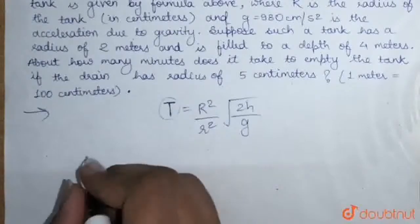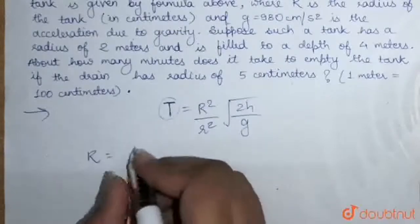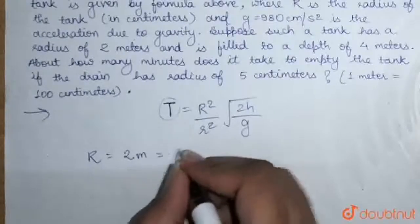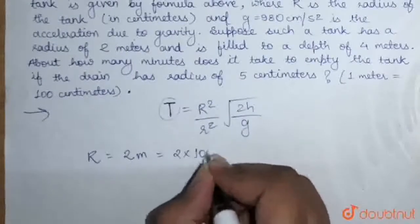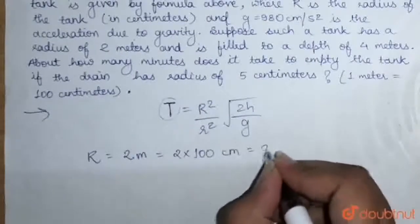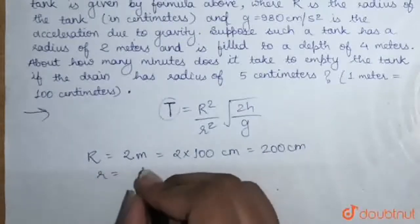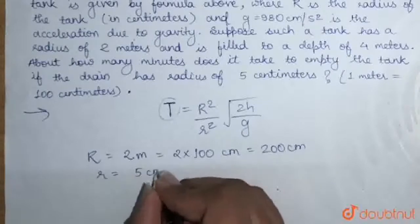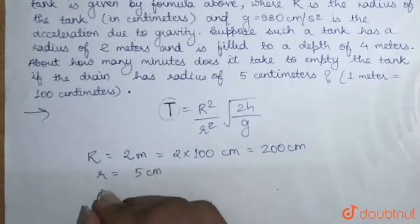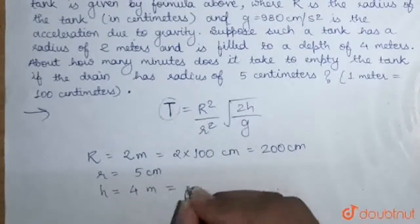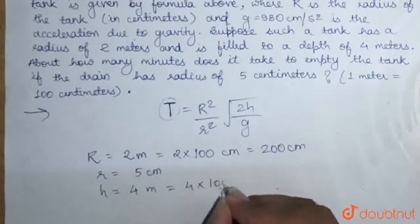Capital R is given as 2 meters, which is 2 times 100 centimeters, equal to 200 centimeters. Small r is given as 5 centimeters. And h is given as 4 meters, which is 4 times 100 centimeters,